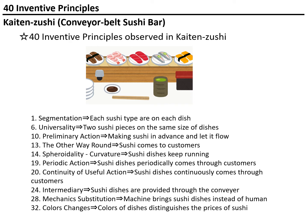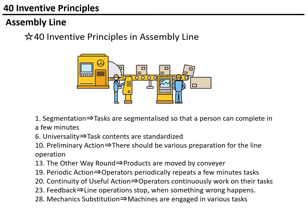Around us, you may find many of the 40 inventive principles. Another example is the assembly line. We can also see segmentation here: tasks are segmentalized so that a person can complete them in a few minutes. And universality: task contents are standardized. Thanks to these two inventive principles, a company can save costs, because they do not need to develop highly skilled professionals — just segmentalizing and universalizing tasks so that everybody can do them contributes to saving the cost of the product.